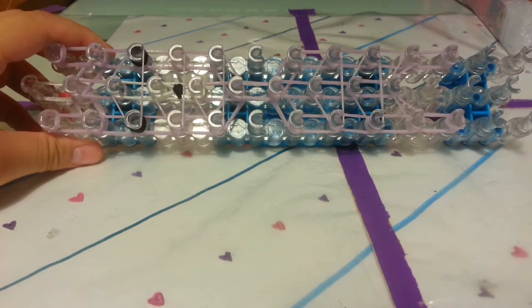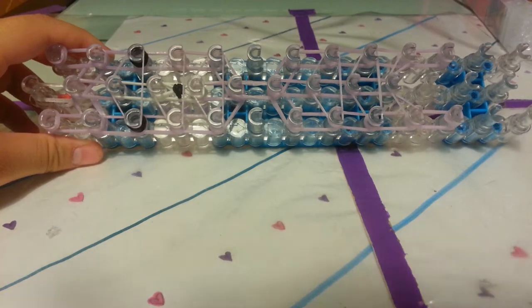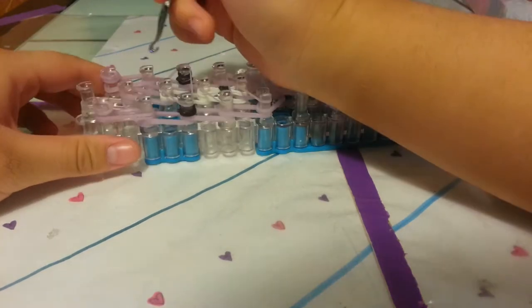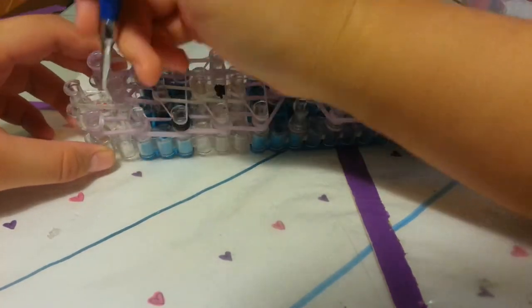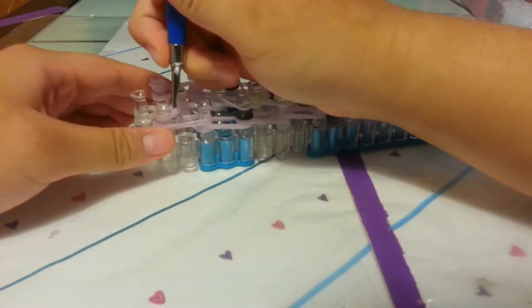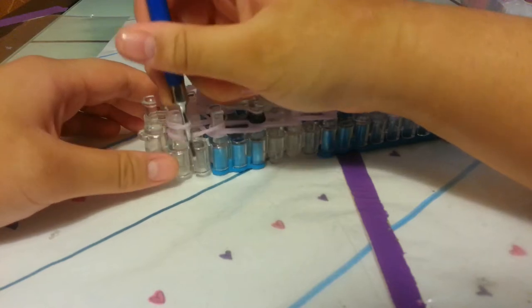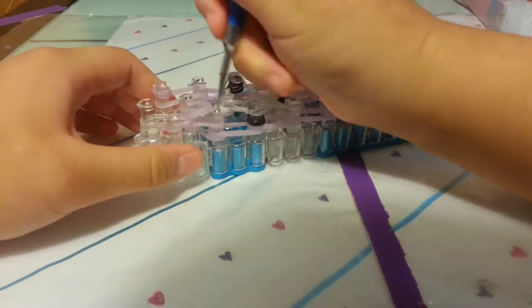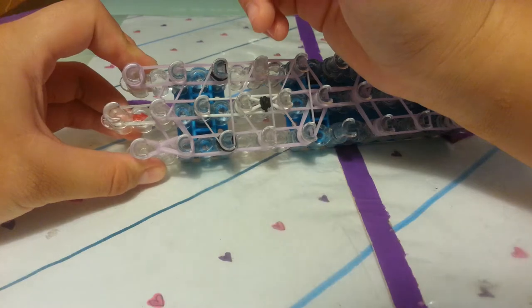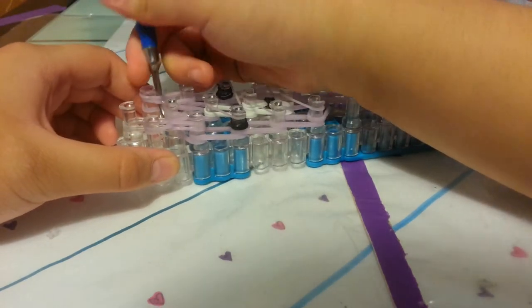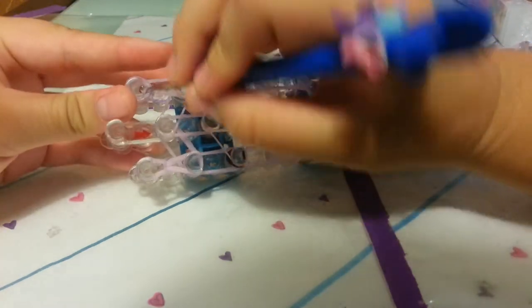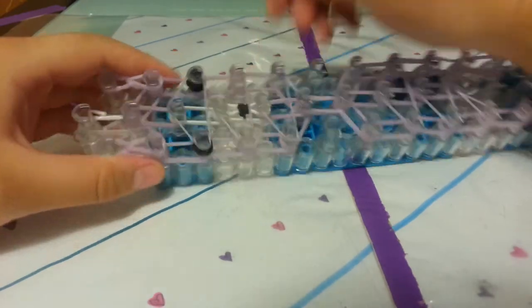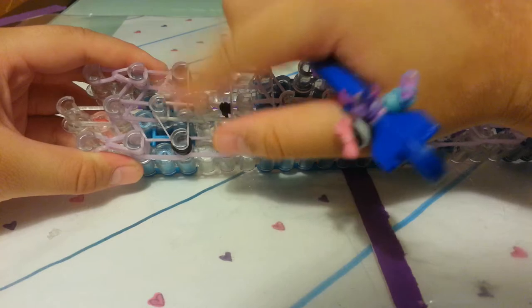So I'm going to take my hook and before we loop the whole thing, we need to loop the eyes and the ears. We're going to go where the ears are so it's up here. I'm going to go in the cap band, circle around, grab the bottom two bands. I'm going to hold on to the cap band so it doesn't fall and loop downwards like that. And then I'm going to also do that on the other side, circle around, grab the bottom two bands, hold on to the cap band and loop downwards. Now let's move on to the eyes.